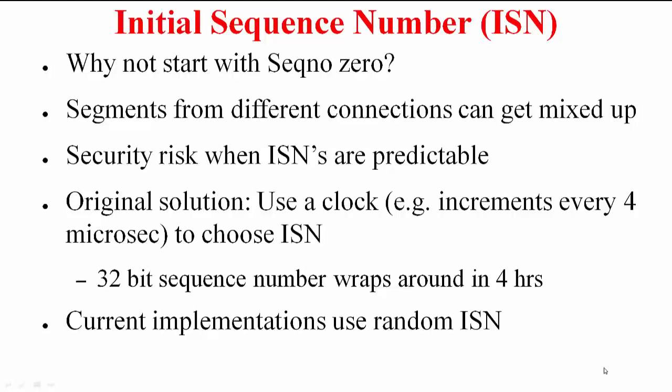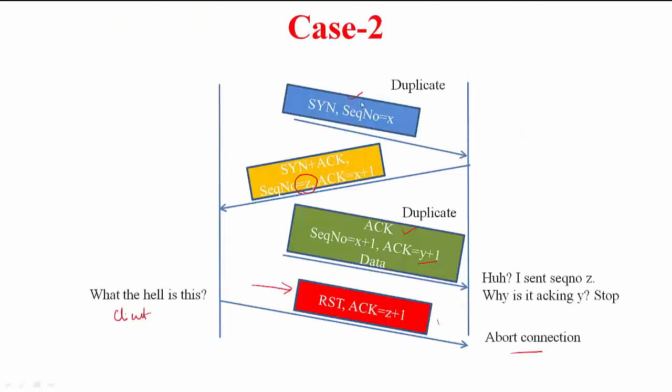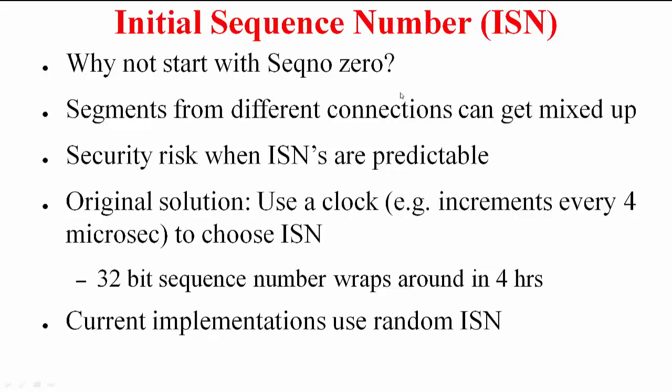Let me spend a little bit more time on initial sequence numbers. When we were describing the sliding window protocol, we always started with sequence number 0. Now the question is, why do we not just start with sequence number 0? It makes things a little bit less complex. As you saw here, this distinction could happen because these sequence numbers differed. It is very important to use different sequence numbers for the different connections so that the segments from different connections cannot get mixed up. Not only that, there is a security risk when using sequence numbers that are predictable.